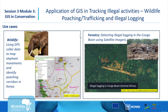For forestry, we can detect illegal logging using remotely sensed data. The image on the right is a high-resolution image of the Congo. By periodically capturing high-resolution images of a forest or protected area on a weekly or monthly basis and comparing them over time, we can detect any illegal activities happening on the ground specifically related to forest degradation.